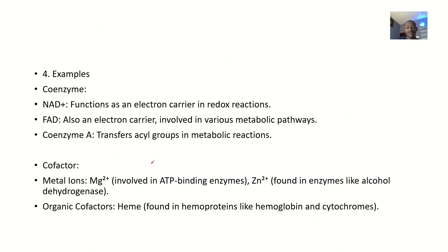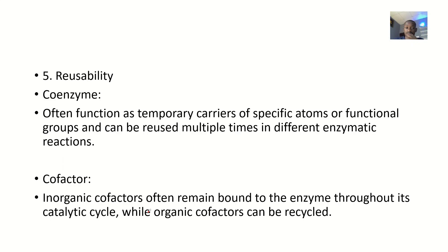For examples: coenzymes include NAD, FAD, and Coenzyme A. Cofactors include metallic ions like magnesium and zinc. Organic cofactors include heme, which is found in hemoglobin, which transports oxygen in the body.